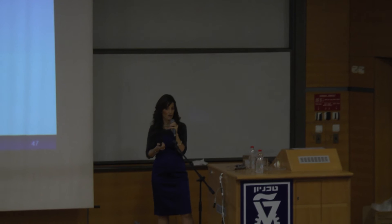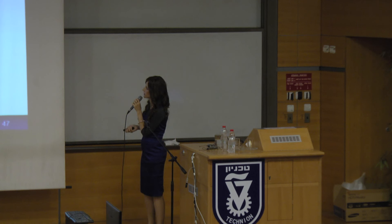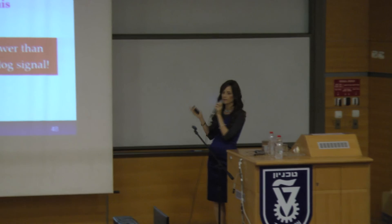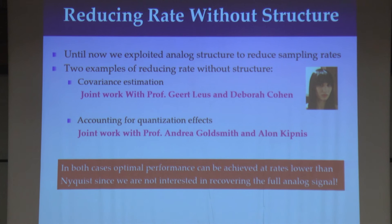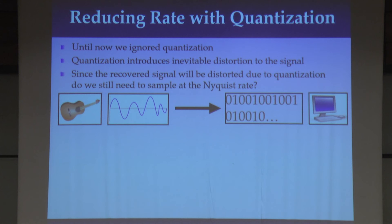I want to take just a few minutes to talk about how we could reduce sampling rate without structure, which of course seems puzzling — if we don't have structure, how can we reduce the rate? The answer is that we're interested in different problems, not actually in recovering the signal. Two examples: one is covariance estimation, which Debbie will be talking more about. The other is when we take quantization into account. Until now we only talked about sampling; we didn't talk about quantizing the data. When you quantize the data you're introducing distortion, and the question is — if you're going to be introducing distortion anyway, maybe we don't need the optimal sampling rate. Maybe it's okay to have some distortion from the sampling but compensate with less distortion from quantization, such that all together we end up with the same distortion — and this actually turns out to be true.